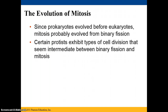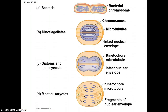There are certain protists that exhibit types of cell division that seem intermediate between binary fission and mitosis. That means they're not quite binary fission, and they're not quite mitosis — they're somewhere in the middle along the spectrum.